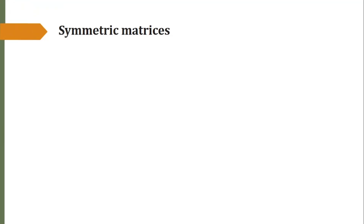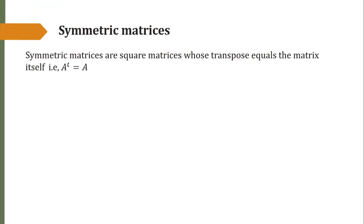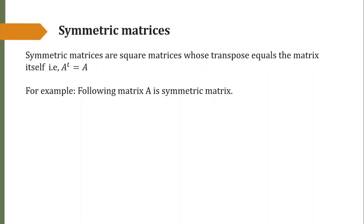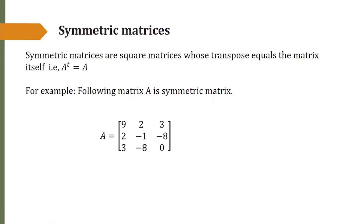We begin with symmetric matrices. These are the matrices whose transpose equals the matrix itself — that is, if A is the matrix and its transpose is same as A, then A is called a symmetric matrix. For example, the following matrix A is a symmetric matrix. Every row is the same as the corresponding column: the first row is the same as the first column, the second row is the same as the second column, and the third row is the same as the third column. So its transpose equals the original matrix, therefore this matrix is symmetric.